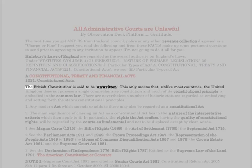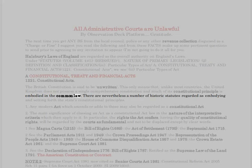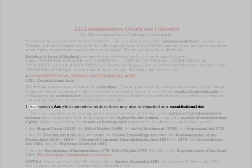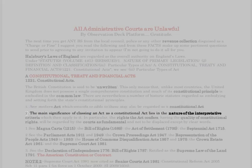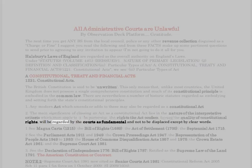The British constitution is said to be unwritten. This only means that unlike most countries, the United Kingdom does not possess a single comprehensive constitution, and much of its constitutional principle is embodied in the common law. There are nevertheless a number of historic statutes regarded as embodying and setting forth the state's constitutional principles. Any modern act which amends or adds to these may also be regarded as a constitutional act. The main significance of classing an act as a constitutional act lies in the nature of the interpretative criteria which then apply — in particular, the rights the act confers, having the quality of constitutional rights, will be regarded by the courts as fundamental and not to be displaced except by clear words.